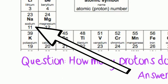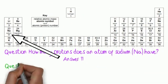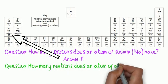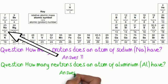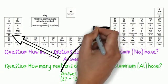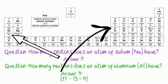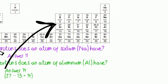More difficult question now. How many neutrons does an atom of aluminium have? The answer is 14. Just take the bottom number away from the top number. So 27 take away 13 protons equals 14 neutrons.